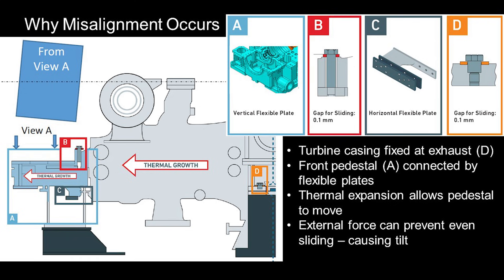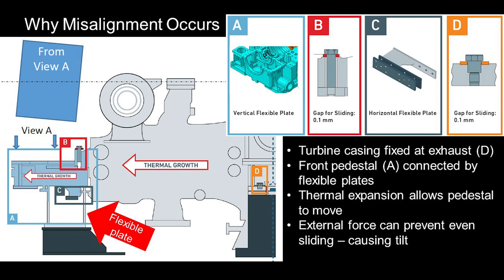So why does this happen? The turbine casing is fixed at the exhaust end, D. The front pedestal A and the lower casing are connected by flexible plates to allow thermal expansion. After operation and during cool down, pedestal A should slide back to its cold position. But an external force prevented it from sliding, causing the pedestal to tilt and misalign.